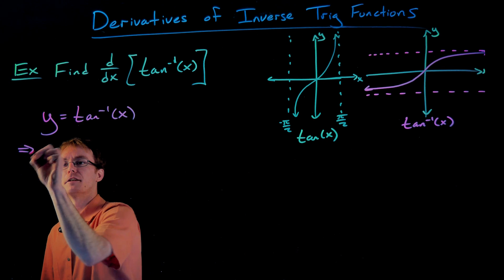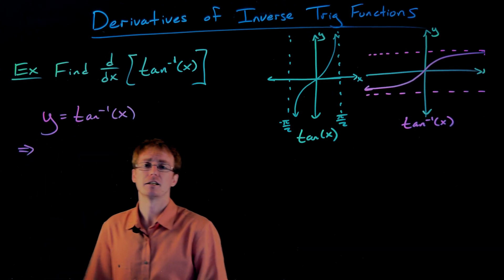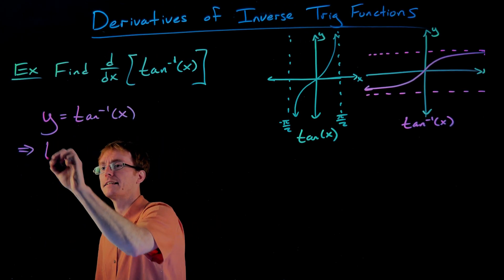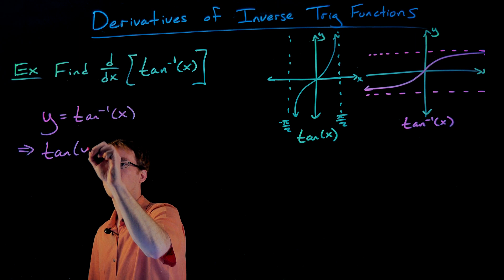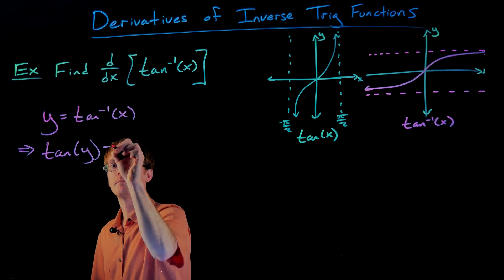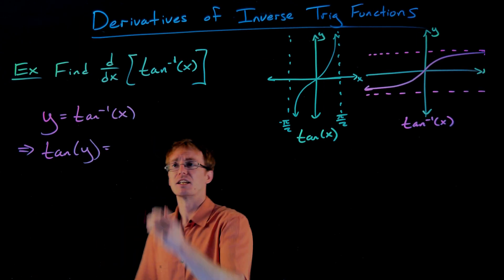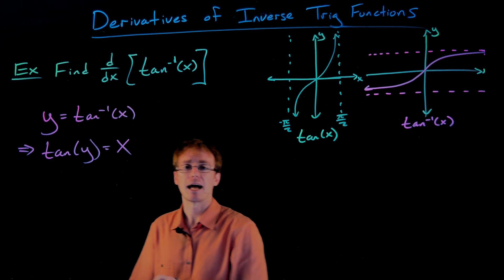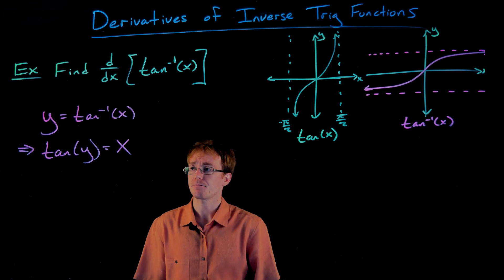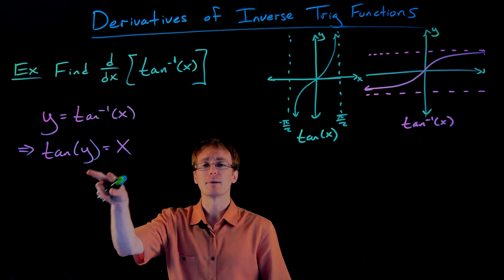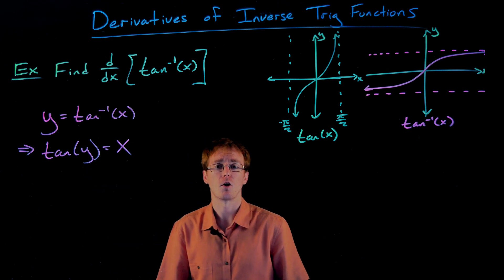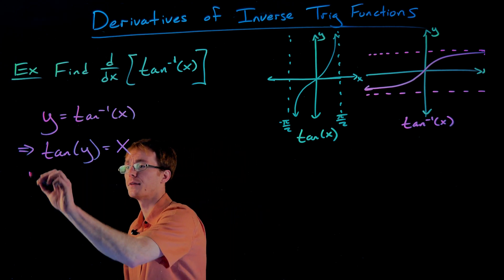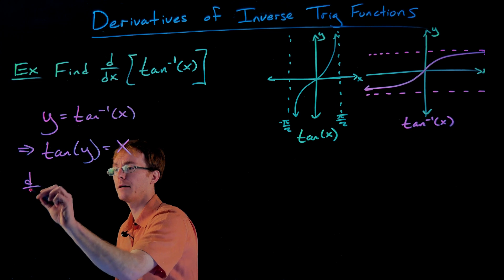Then by the definition of inverse tangent, we know that if we take tangent of our angle y, we're going to get that number x out. And now we can differentiate this form of our equation, so let's go ahead and do that as our next step.